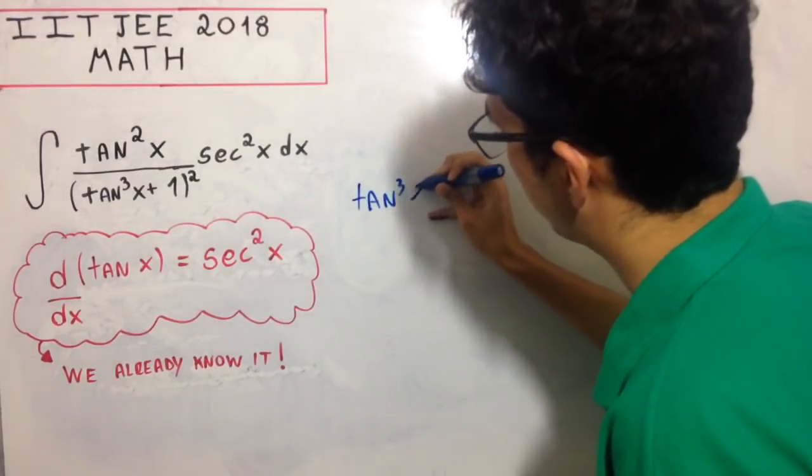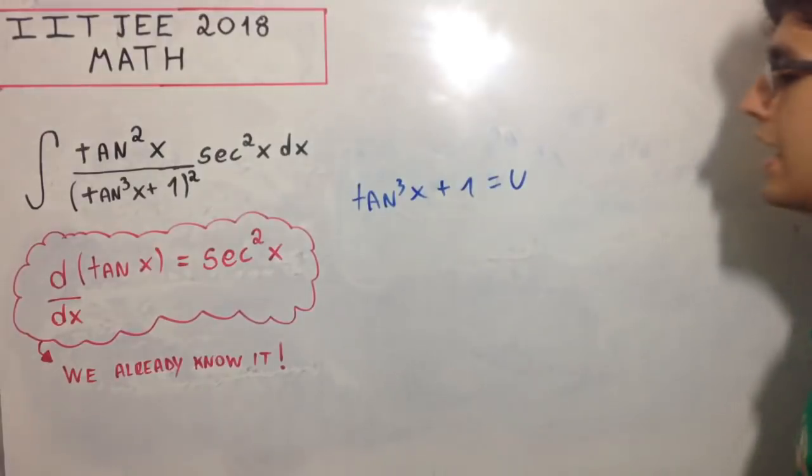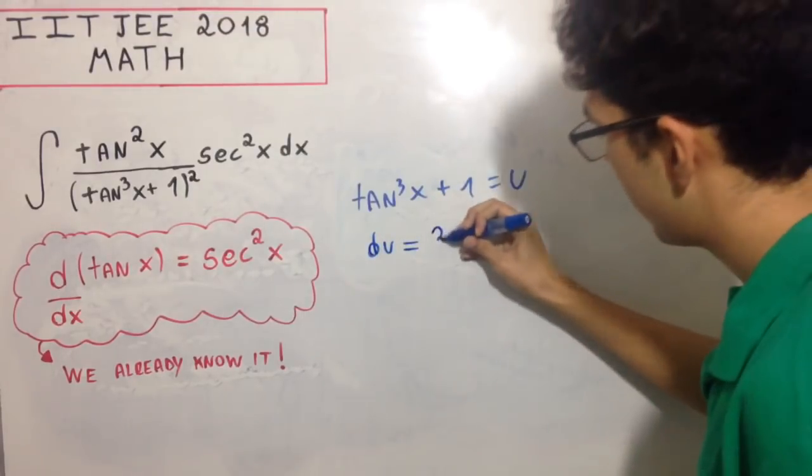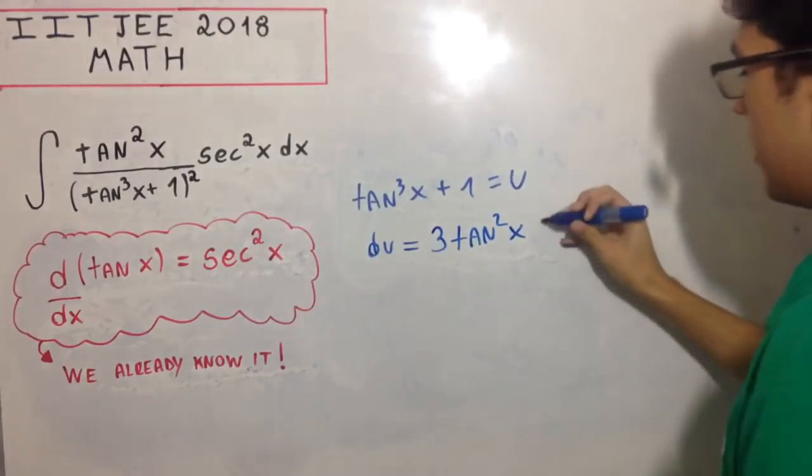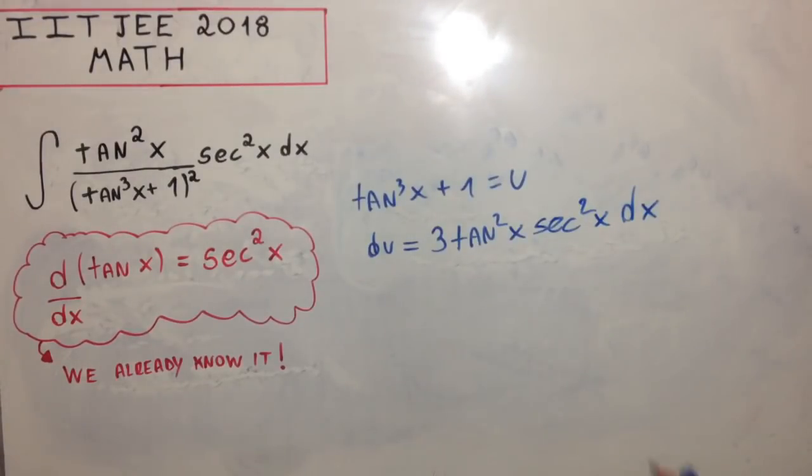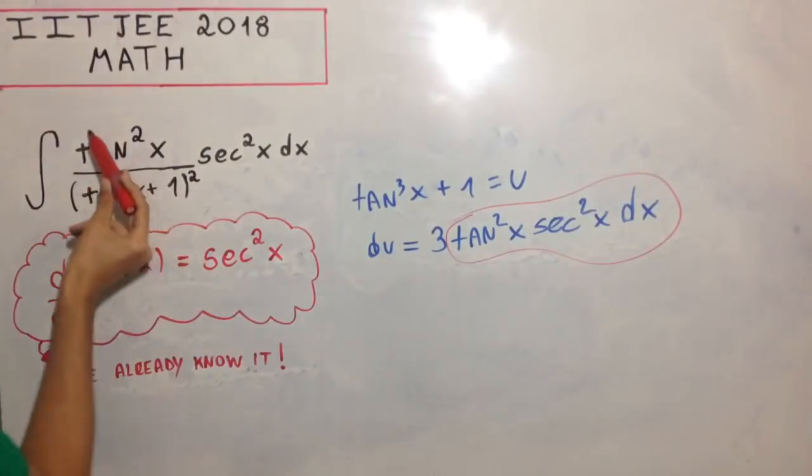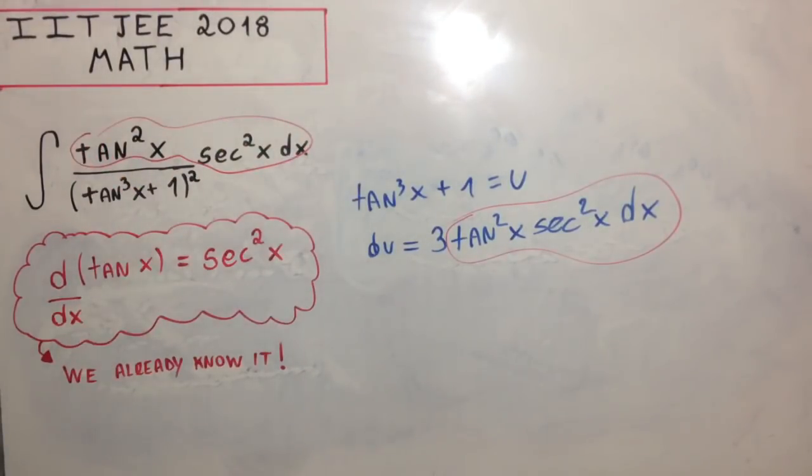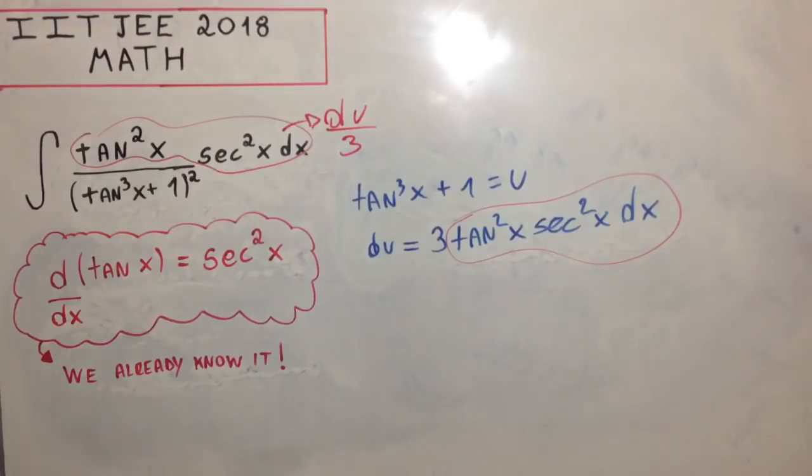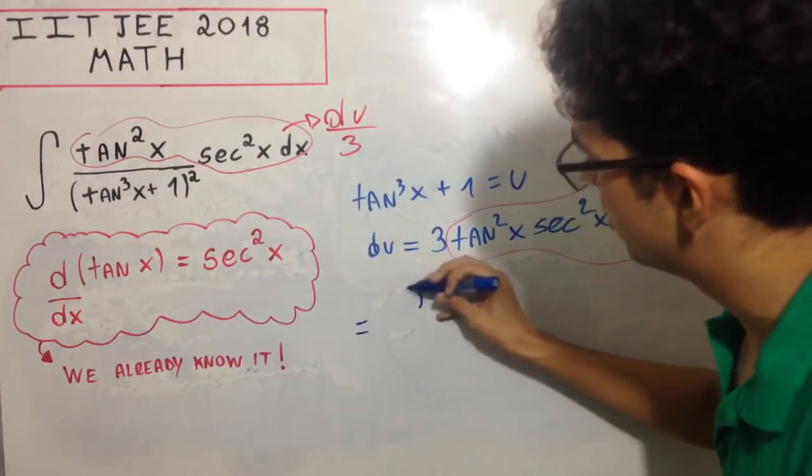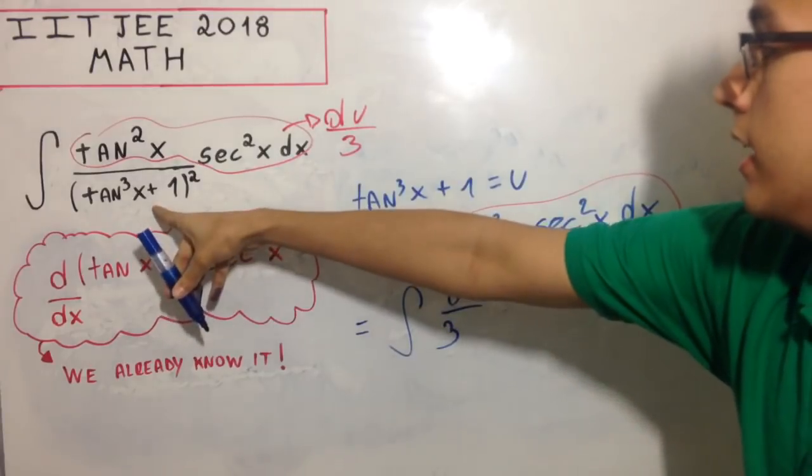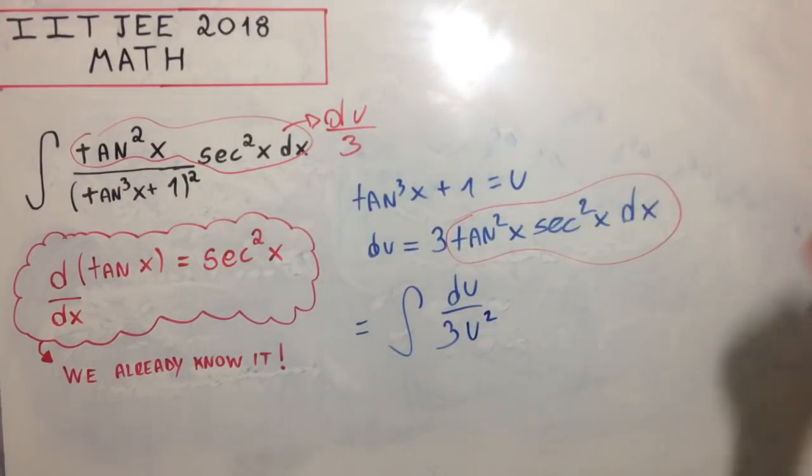This is divided by (tan³x + 1)². Let u = tan³x + 1, and we already know the derivative. So du equals 3tan²x sec²x dx. Notice we have tan²x sec²x dx right here.